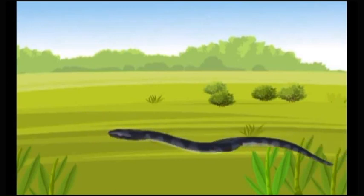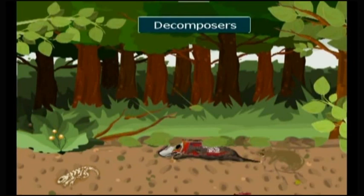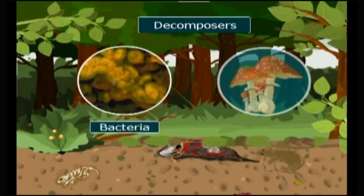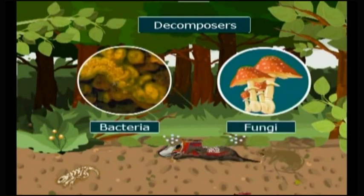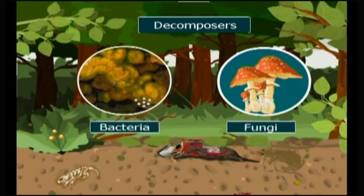A food chain consists of producers and consumers. Some organisms in the ecosystem, such as bacteria and fungi, are heterotrophic and obtain their nutritional requirements by decomposing the dead bodies of both producers and consumers. These organisms are a special type of consumers called decomposers of the ecosystem.